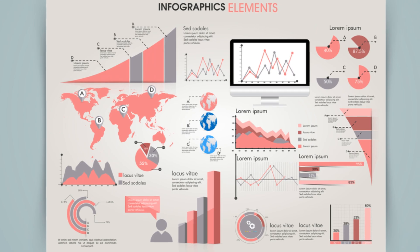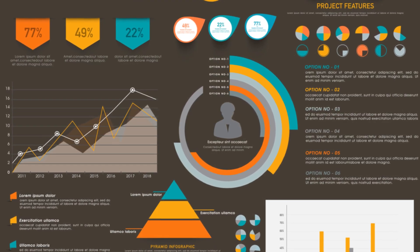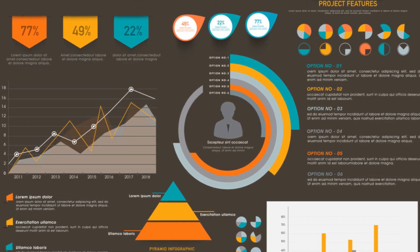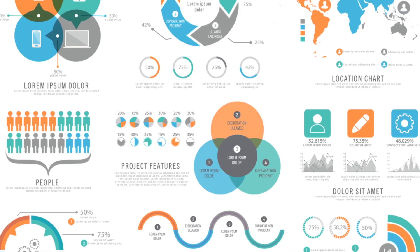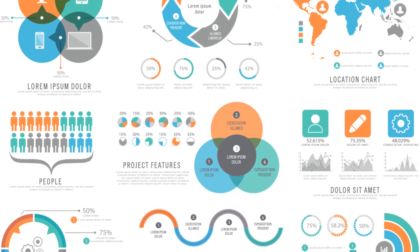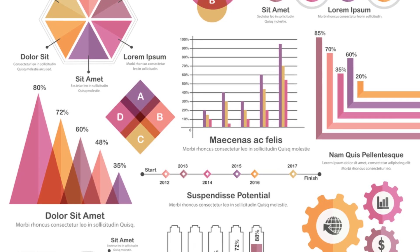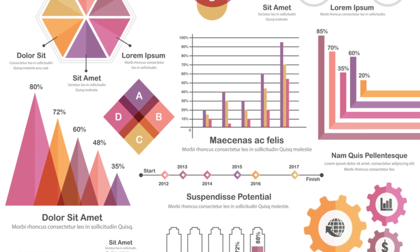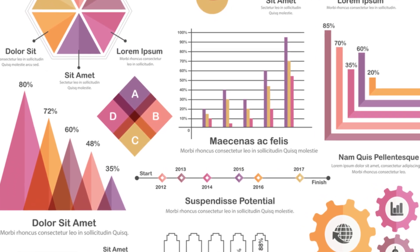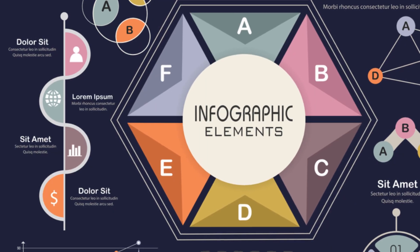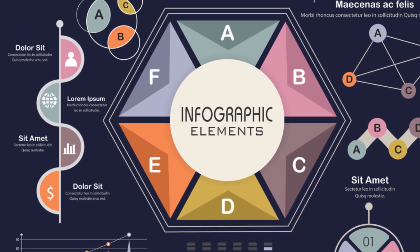Let's start with the type of data. Broadly, data can be categorical or numerical. Categorical data, as the name suggests, involves categories, like the different flavors of ice cream at your local parlor. On the other hand, numerical data is all about numbers, such as the population of a city or the height of the tallest buildings in the world.